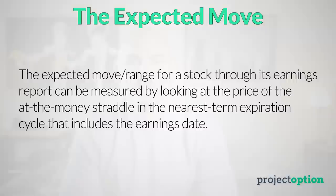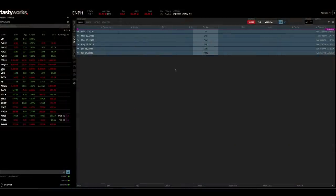The expected move is essentially how much the stock price is expected to move based on the earnings announcement. To get the expected move we can look at the at-the-money straddle price in the expiration cycle that has very little time until expiration but still includes the company's earnings announcement. Let's look at a stock that has earnings coming up using the Tastyworks trading software to look at a real expected move on a stock about to announce its earnings — and that is Enphase Energy with the ticker symbol ENPH.